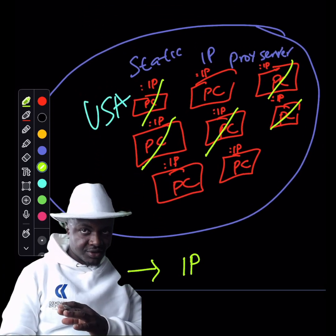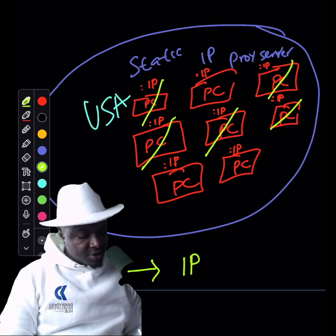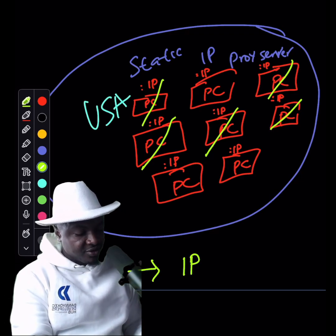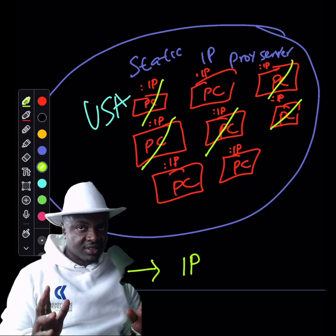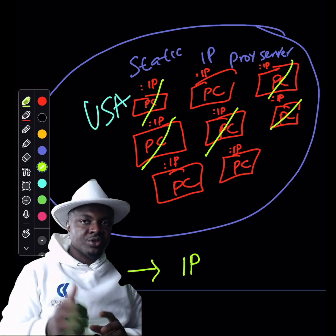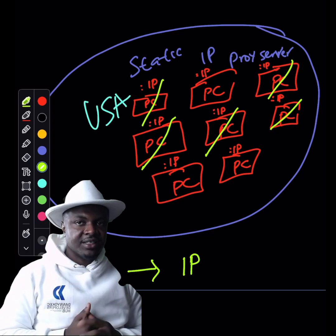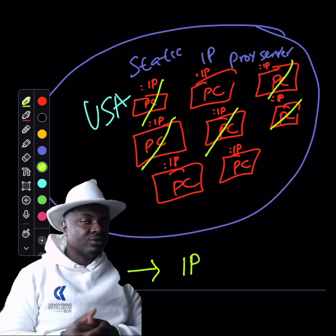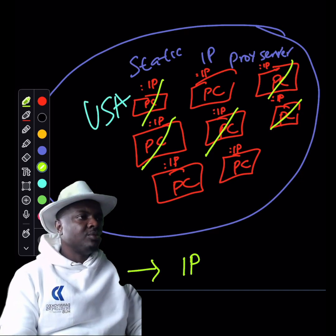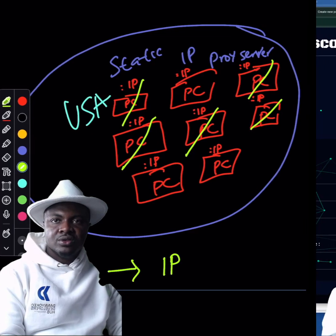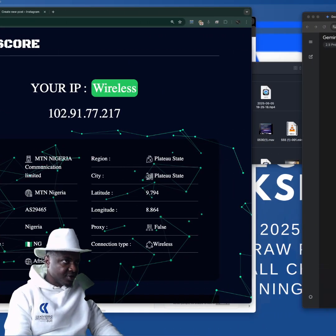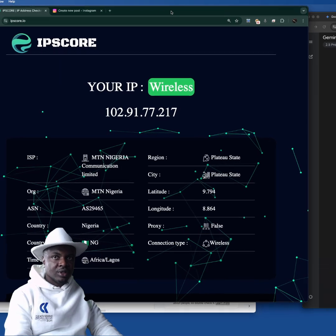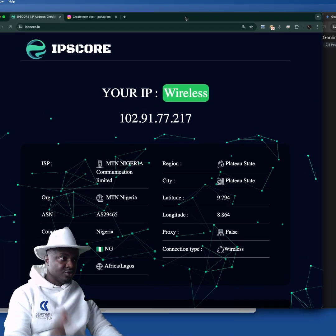Now the problem when you try to use static IP — there are two major types of static IP. We have the one we call dedicated data center, and we have the one we just call normal data center. I'm going to show you examples on different proxy vendors — people who sell proxies, which we call proxy vendors.